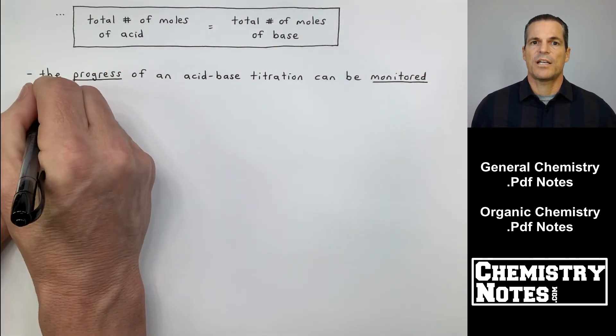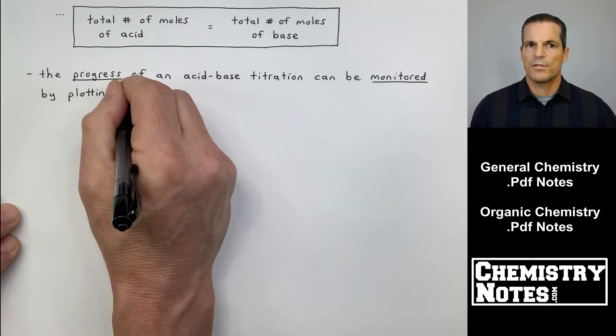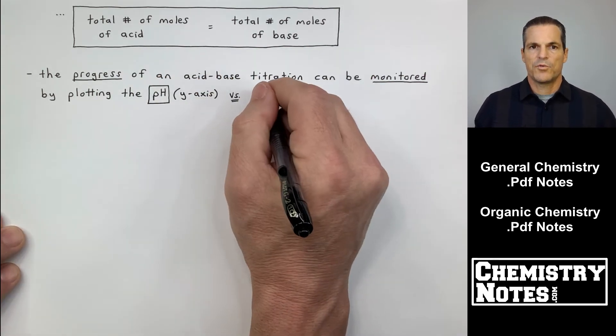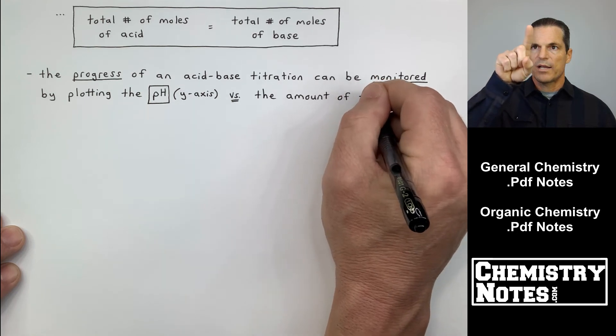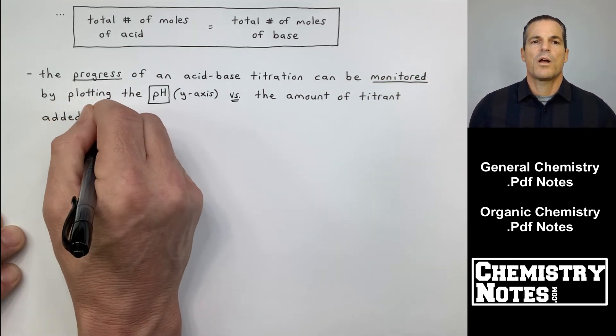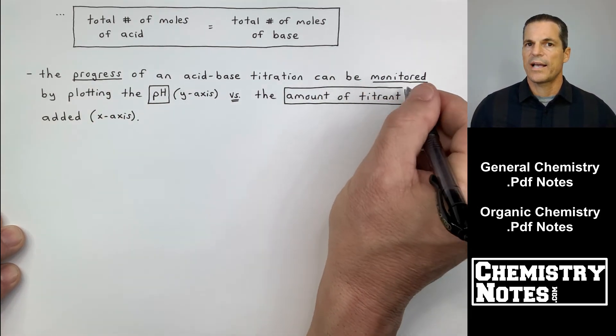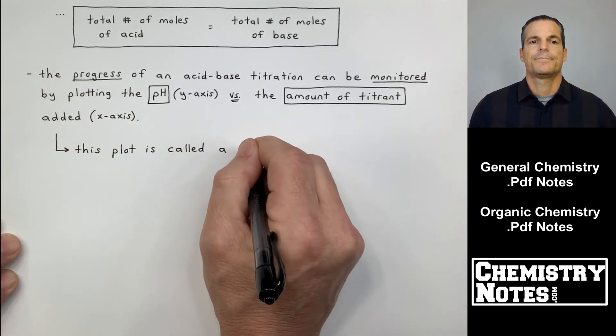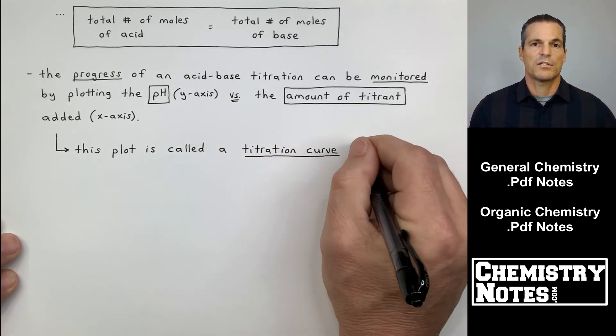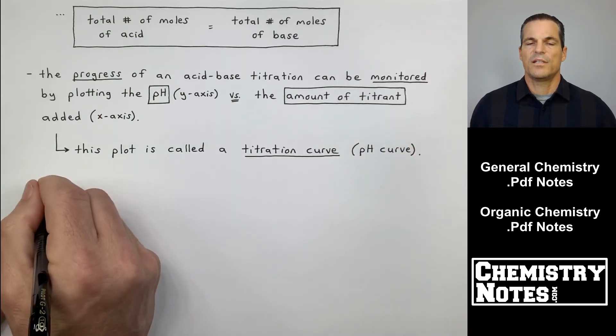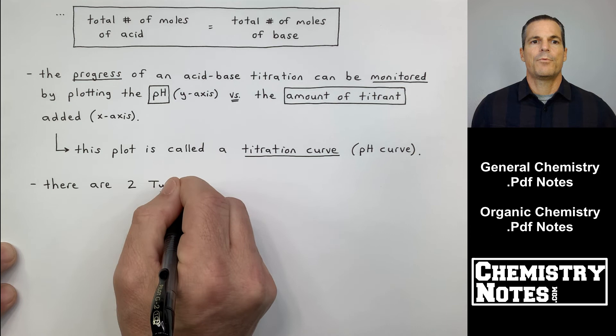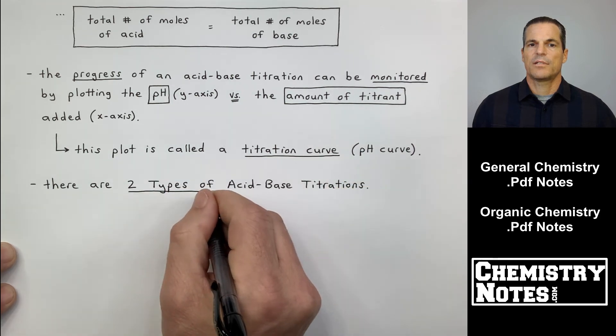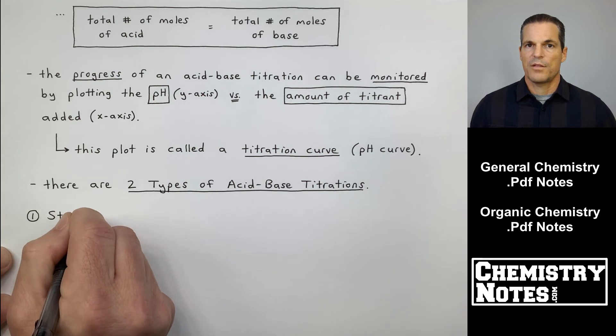It says here, the progress of an acid-base titration can be monitored by plotting the pH on the y-axis. The y-axis is the vertical axis. I always remember that because if you wrote the letter y, y goes down like a vertical down. The progress of an acid-base titration can be monitored by plotting the pH on the y-axis versus the amount of titrant in milliliters, usually, on the horizontal x-axis. This plot is called the titration curve. It's also called the pH curve, and we'll see some of these in later videos, not today.